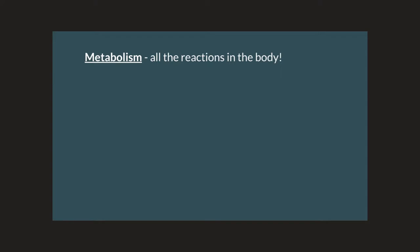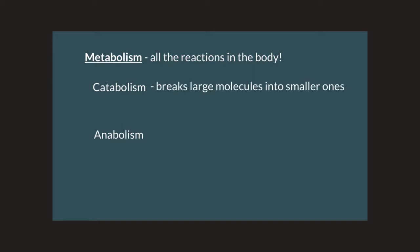A lot of times when we think about metabolism, we think about how high our metabolism is so that we can lose weight — is our body using things fast enough? Because if we can burn more calories than we take in, then our metabolism must be really high. But metabolism, which is all the reactions that are occurring in the body, is actually composed of both catabolism and anabolism. Catabolism includes the reactions needed to break large molecules into smaller ones, while anabolism includes the reactions that build complex molecules from simpler ones.